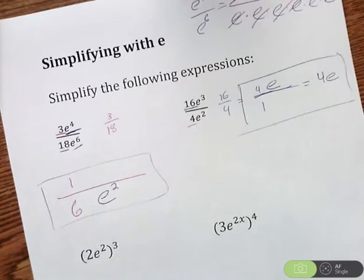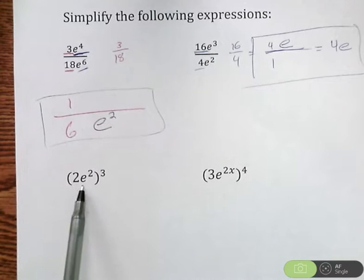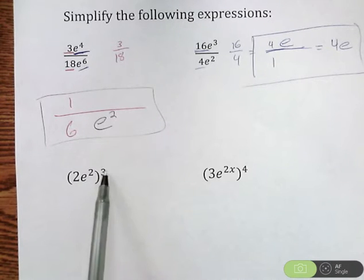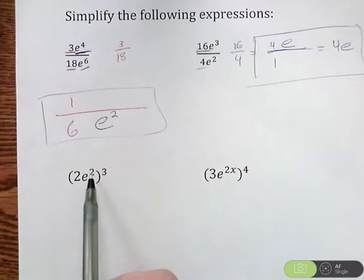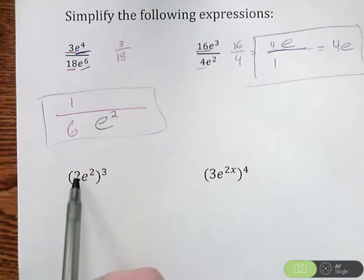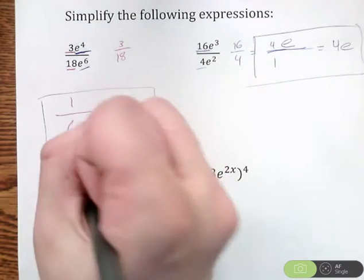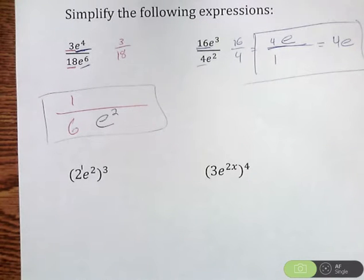The next one. So this is another exponent property. So I have 2e squared raised to the third power. When you have exponents on the inside and exponents outside with parentheses, I want to make sure I know all the exponents on the inside. So this e is raised to the second power. This 2, I'm going to figure out what exponent that's raised to. It's not written there, but that is actually 2 to the first power. We just normally don't write the 1.